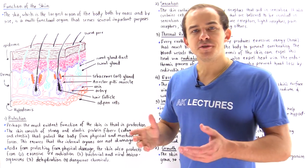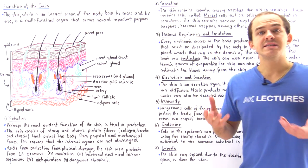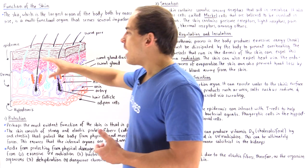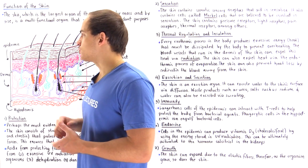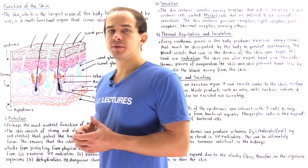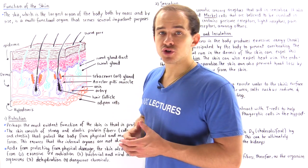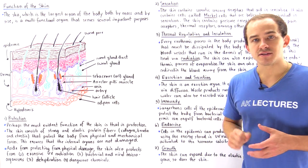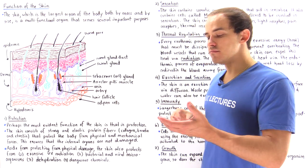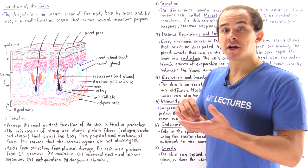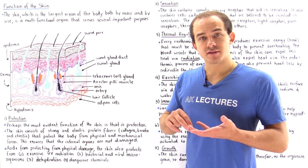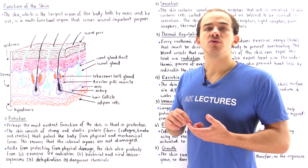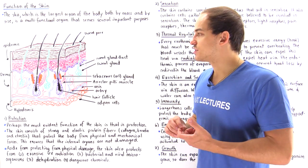Let's begin by recalling some basic structure of the skin. The outermost portion is the epidermis, and this portion contains four specialized cells: keratinocytes, melanocytes, Langerhans cells, and Merkel cells.